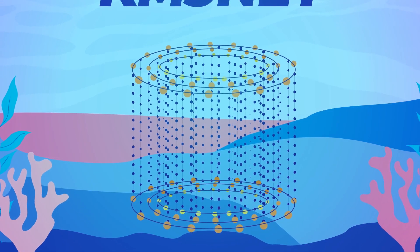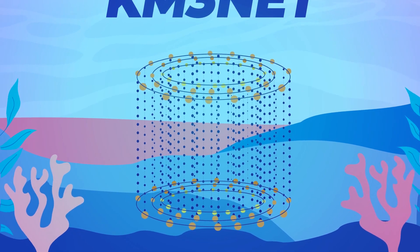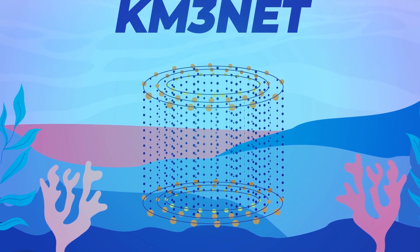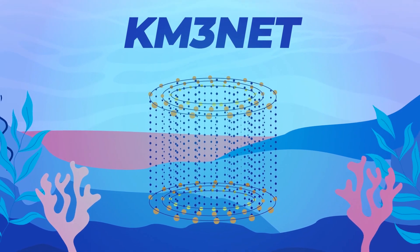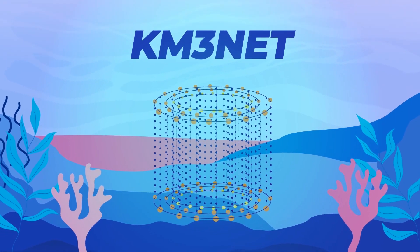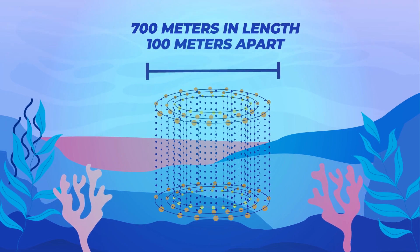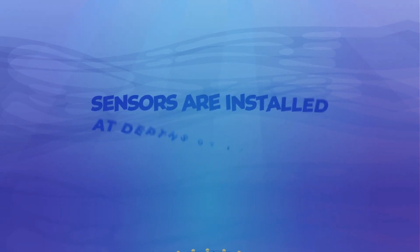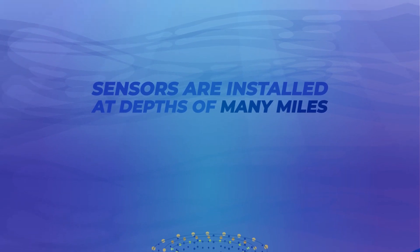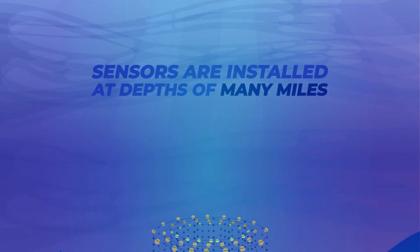To do so, KM3Net will eventually be made up of 10,000 optical modules that are photomultiplier tubes contained within pressurized glass spheres. They will be positioned across 600 detection units that are 700 meters in length and spaced 100 meters apart. This array will, as a result, be able to closely monitor a cubic kilometer of water.